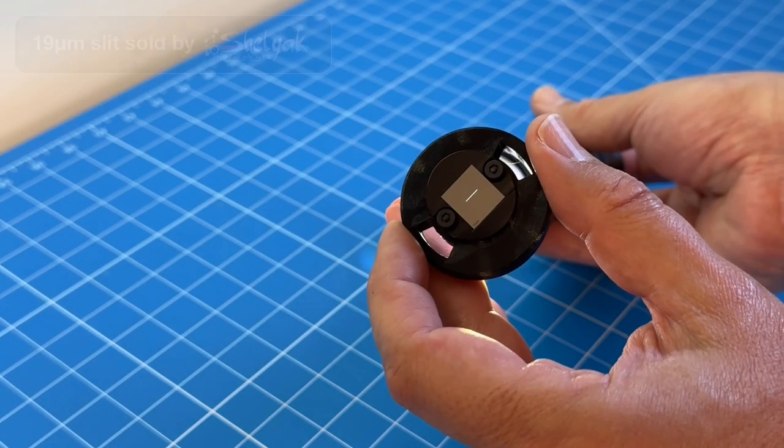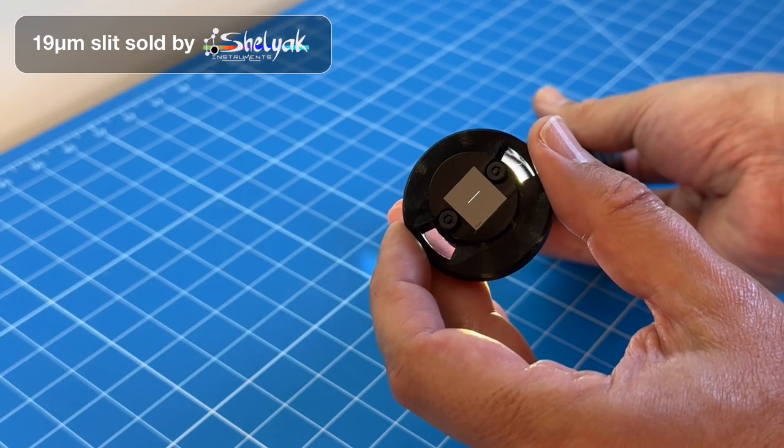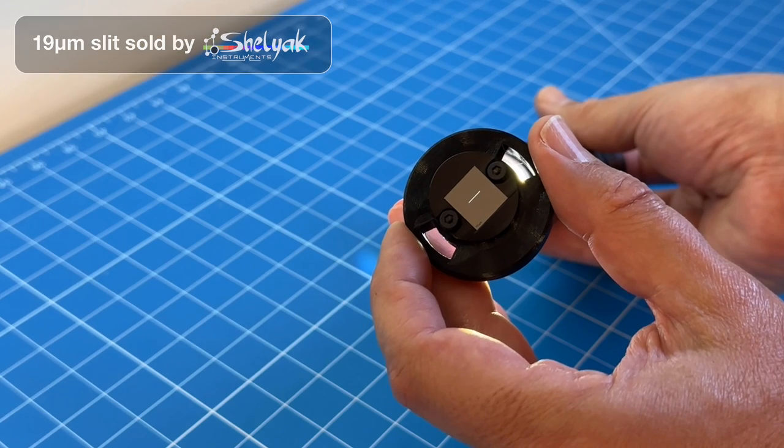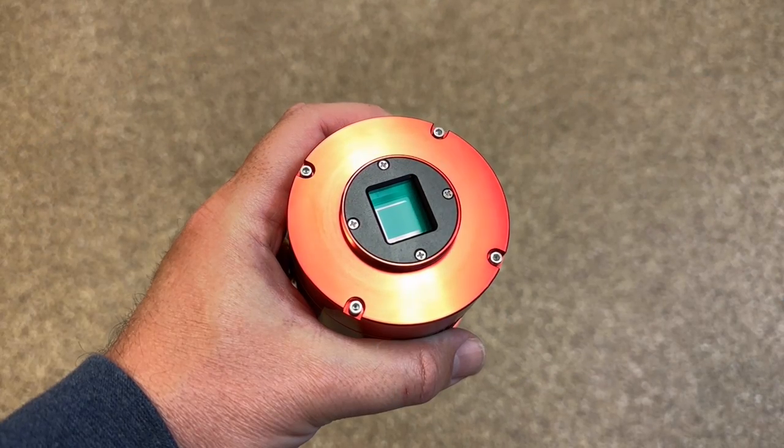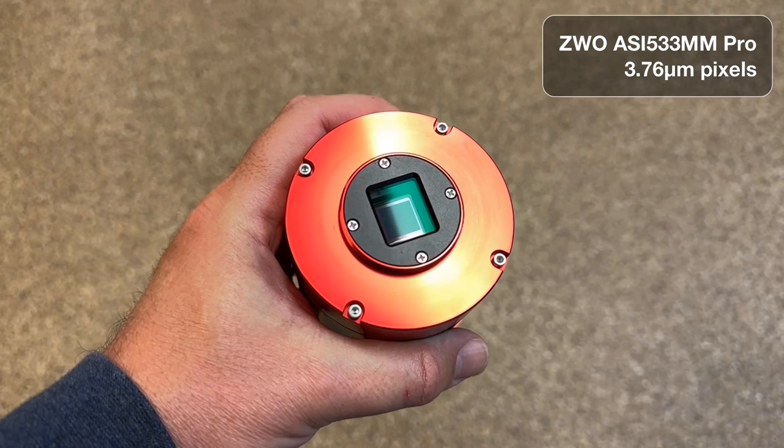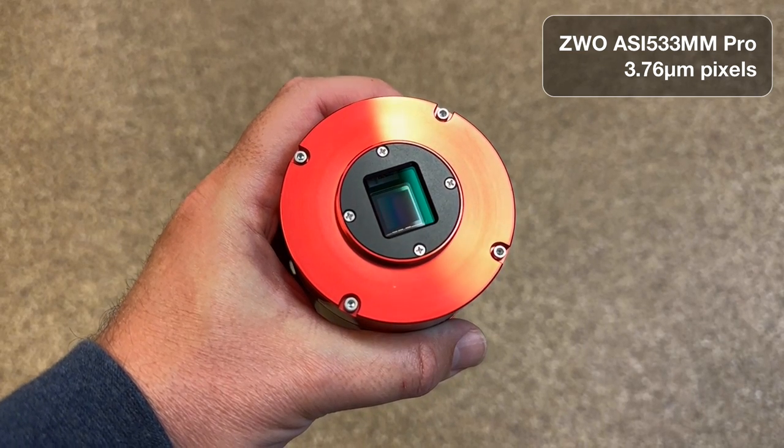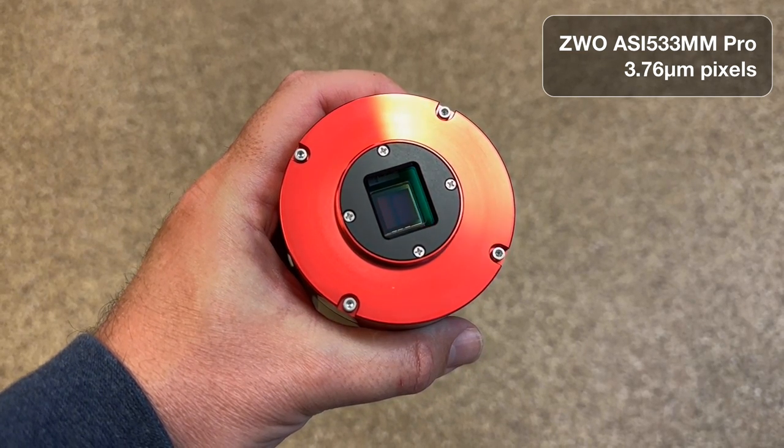In my case, I keep the same slit installed at all times, and it has a width of 19 microns. And the camera that I use is a ZWO ASI 533MM Pro, which has pixels that are 3.76 microns.